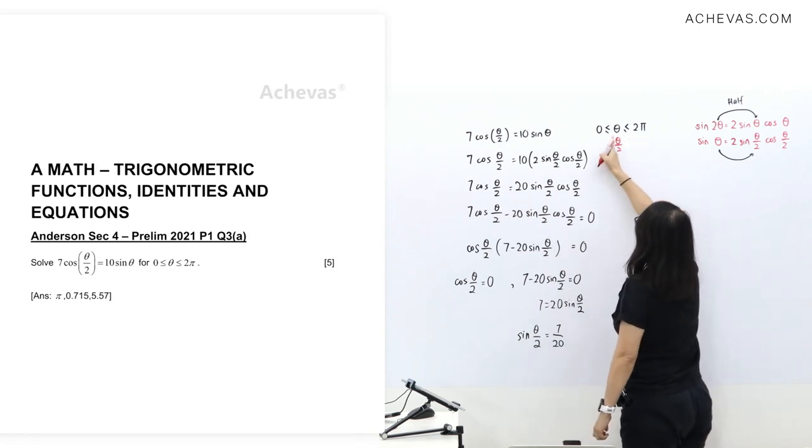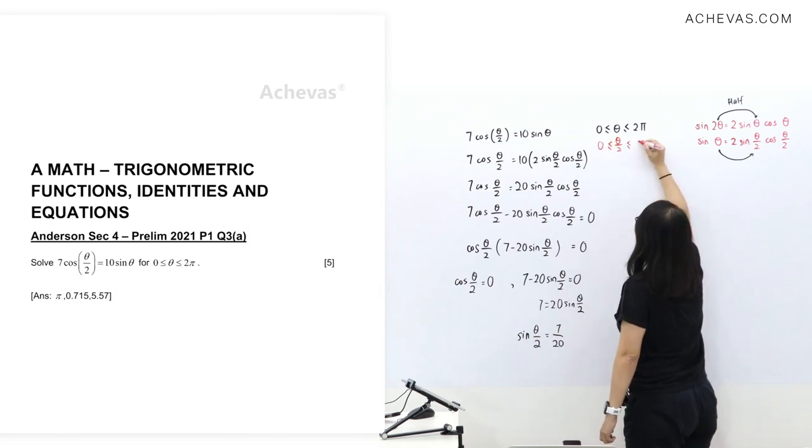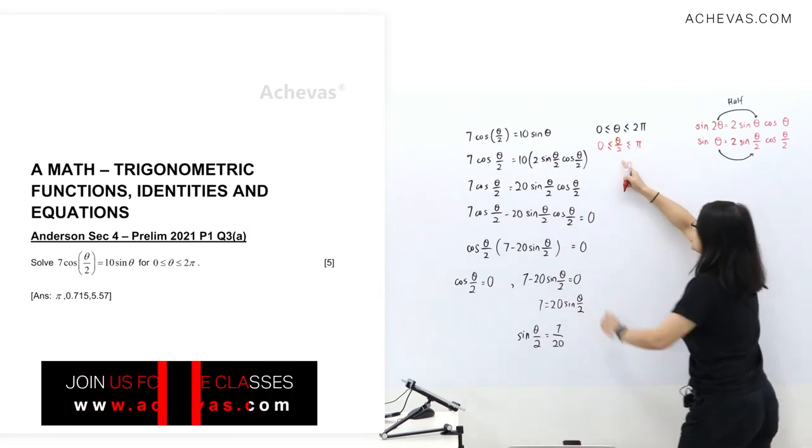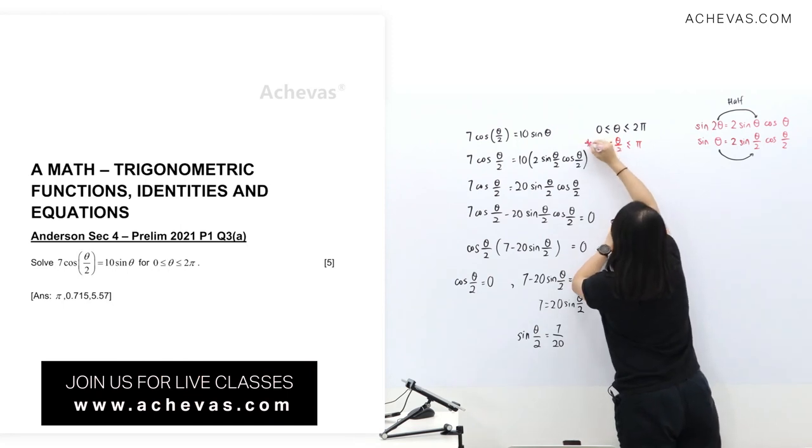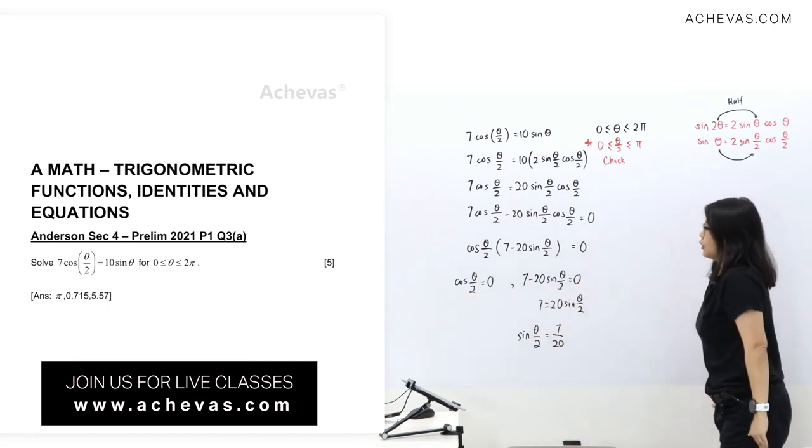Let's just adjust this to theta over 2. I'm dividing 2 left-right 2. This one still maintains 0 but this one will be pi. This one is very important. I'm going to check and reject earlier at this step already. The next step I'm going to take.